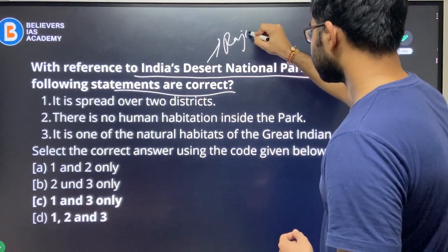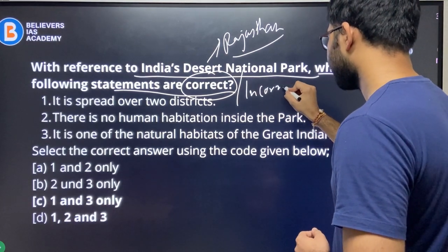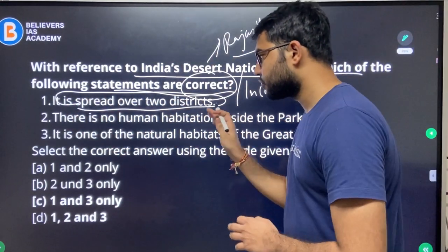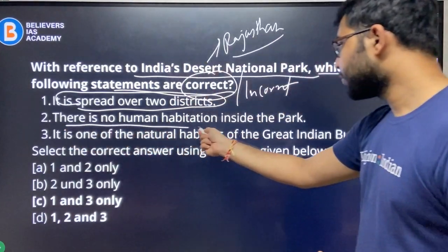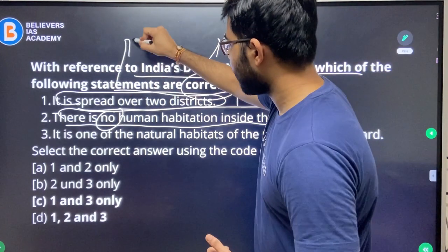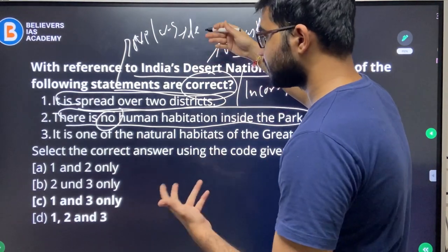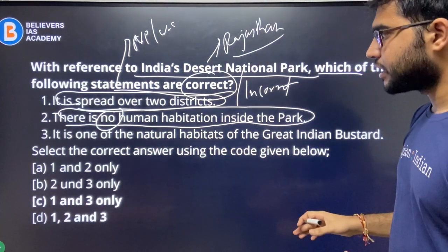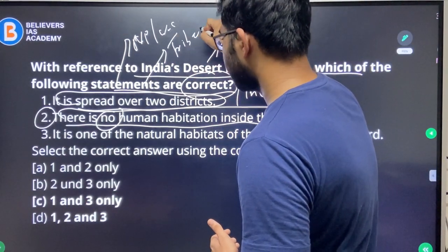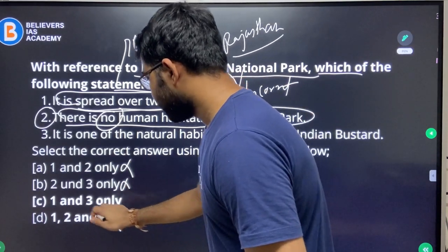Before attempting any question, first check whether they are asking for correct or incorrect statements. First statement: it is spread over two districts — suppose you don't know whether this is true or false. Second statement: there is no human habitation inside the park. Now here is the catch — 'no human habitation' is a very extreme statement. We all know that national parks and wildlife sanctuaries have very less human interference, but 'no human habitation' is extreme. Even some tribes are living inside national parks, so you can easily eliminate this statement.